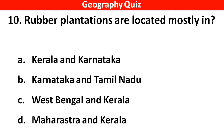Rubber plantations are located mostly in? Right answer is option A — Kerala and Karnataka.